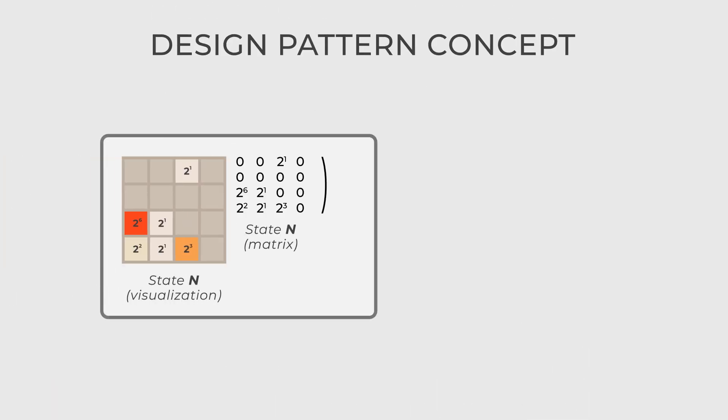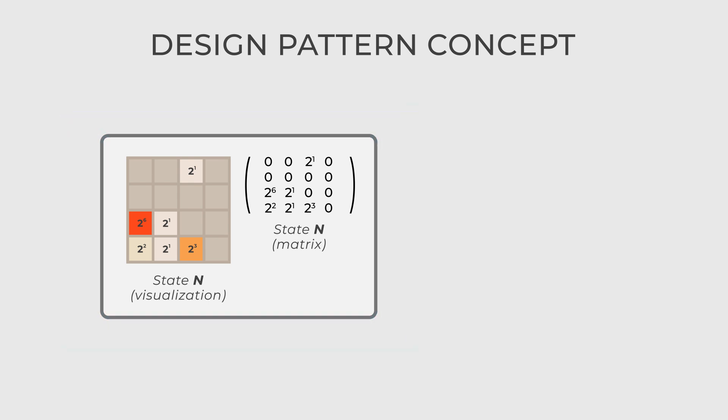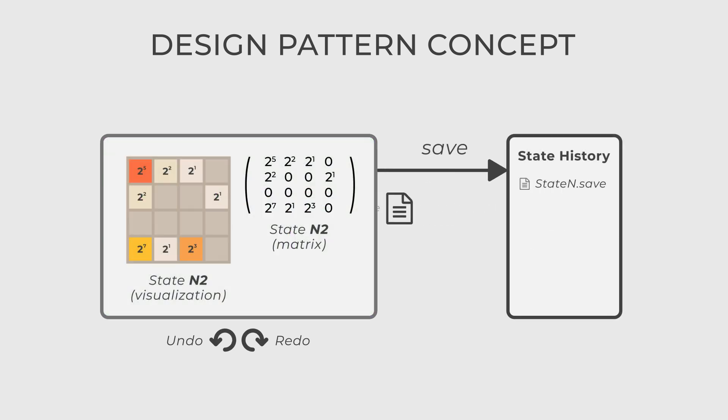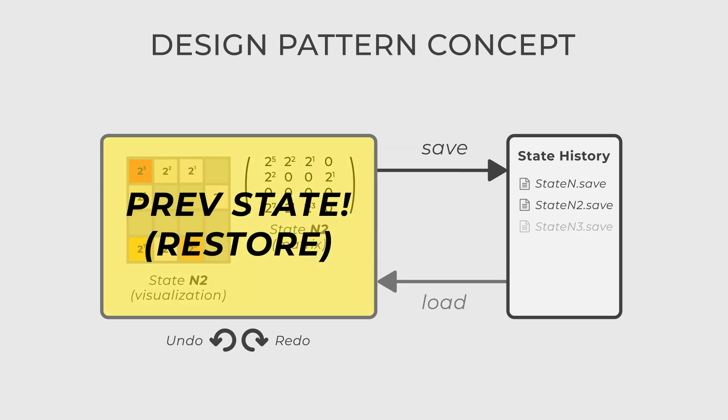The Memento is a behavioral design pattern that captures and externalizes the internal state of an object without breaking its encapsulation. It allows you to save and restore the state of an object, providing the ability to undo or roll back changes and also save a history of the state of an object.